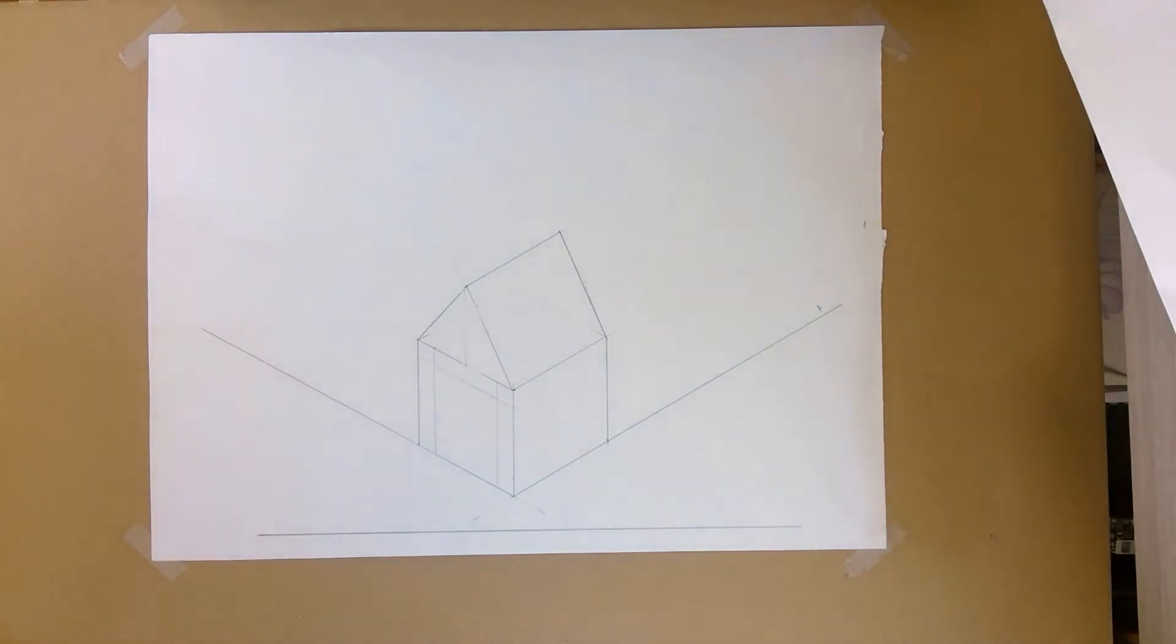Okay, so now that we've got a bit of a base for our house, what we want to do is start practicing drawing circles. Now, because of the way we're working on a 30 degree angle, circles don't look like circles. They look more like ovals or as we call them, ellipses.